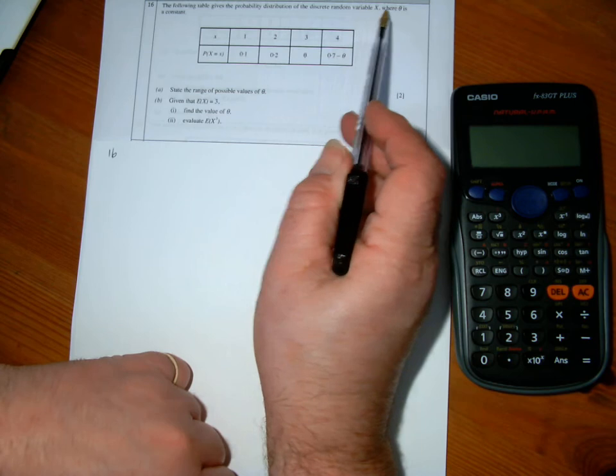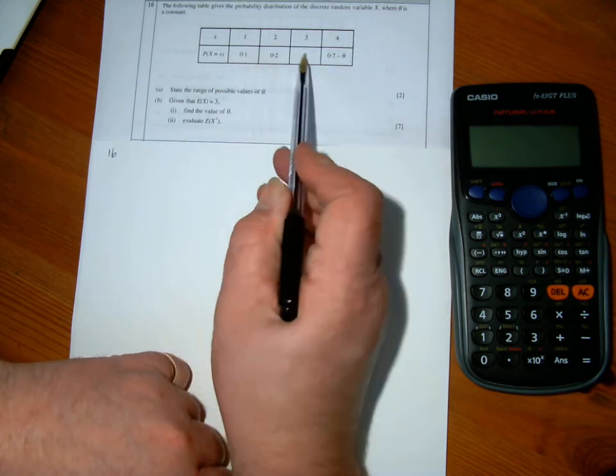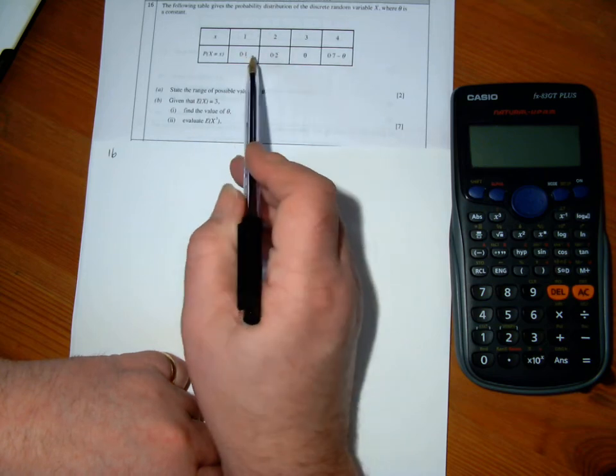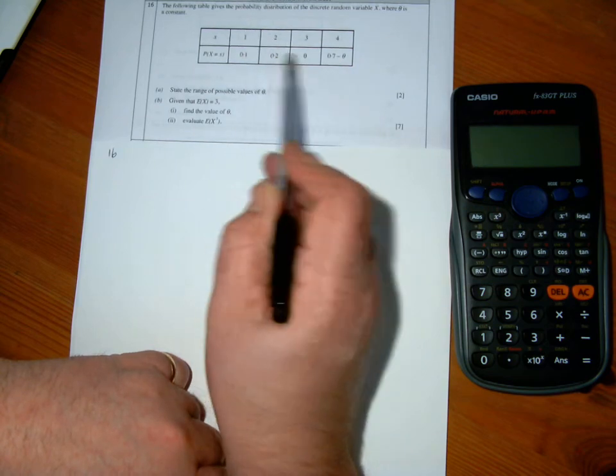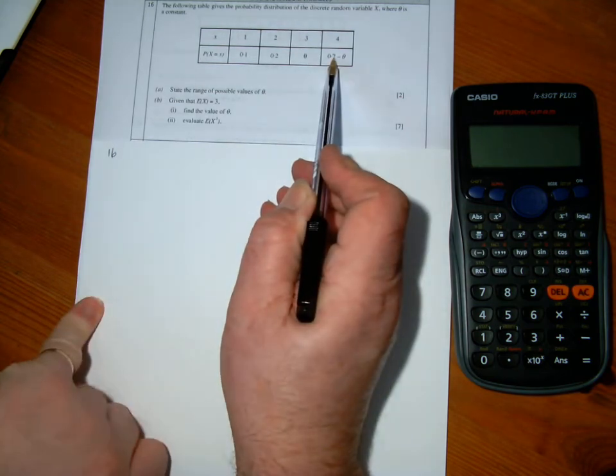Discrete random variable then. What I know for this table is that the bottom line, these four values here in the bottom, will add up to 1. But also the values of probability, so each entry into these four boxes here all have to be between 0 and 1.